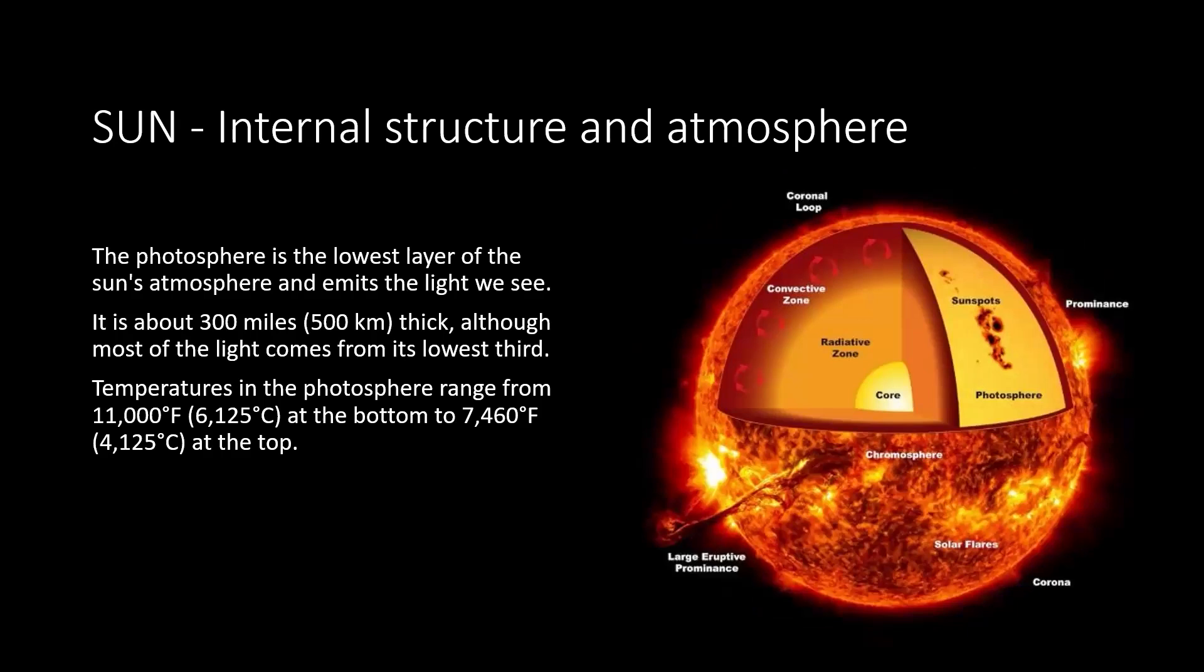Now we're at the surface of the Sun, and this is where the photosphere is. It's the lowest layer of the Sun's atmosphere and emits the light we see. The job of the photosphere is actually to release the photons that had traveled from the core. It's about 300 miles or 500 kilometers thick, although most of the light comes from its lowest third. Temperatures in the photosphere range from 11,000 Fahrenheit or 6,125 degrees Celsius at the bottom to 7,460 degrees Fahrenheit, 4,125 Celsius at the top.